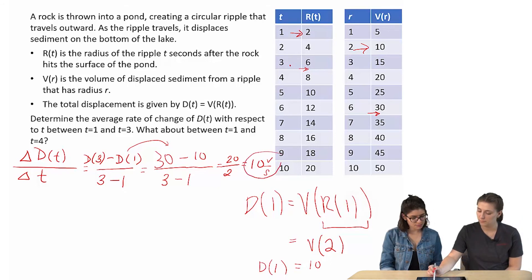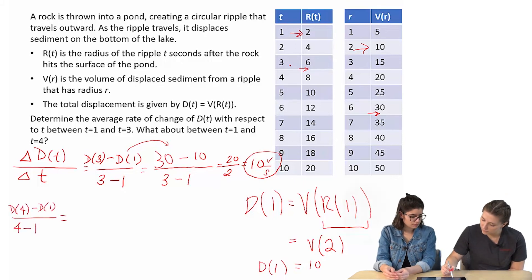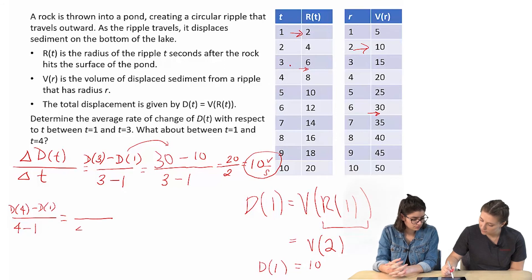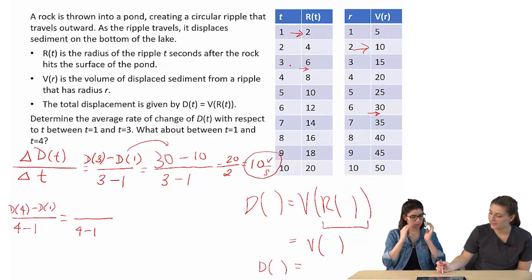Okay. So now we're looking at between t of 1 and t equals 4, right? Yeah. So same thing. Okay. All right. So what would you get for D(4)?